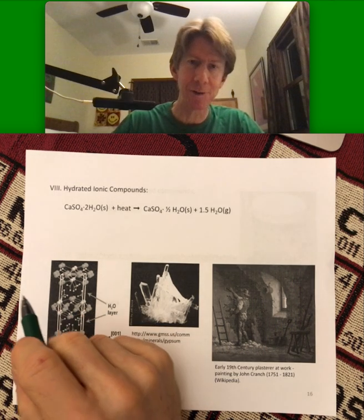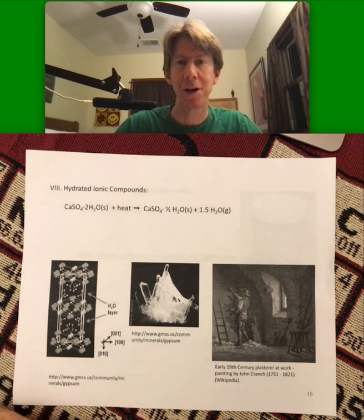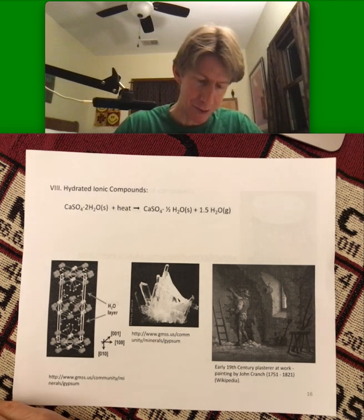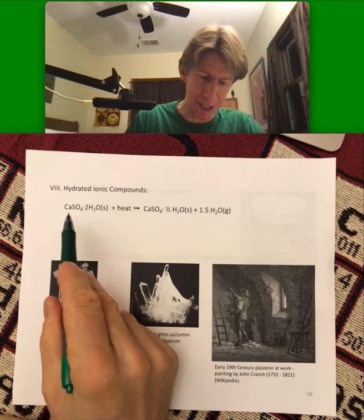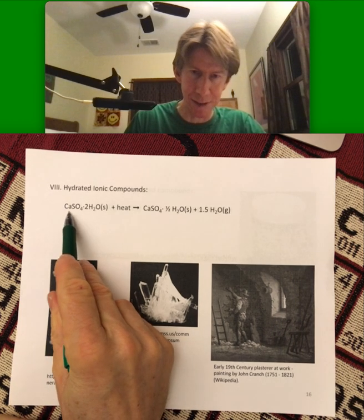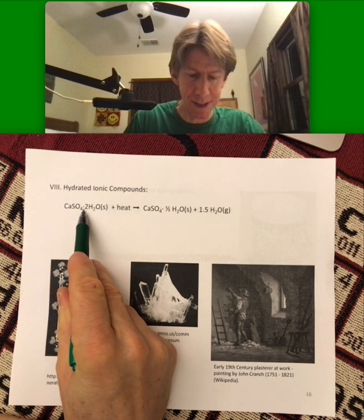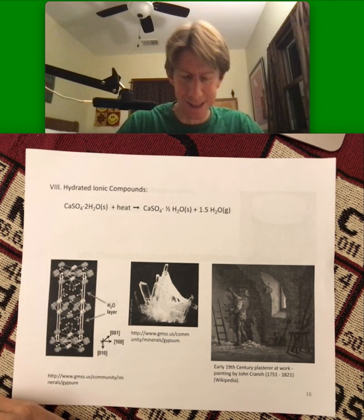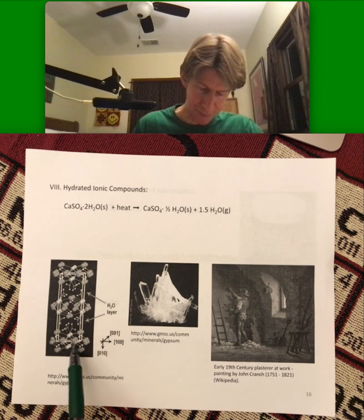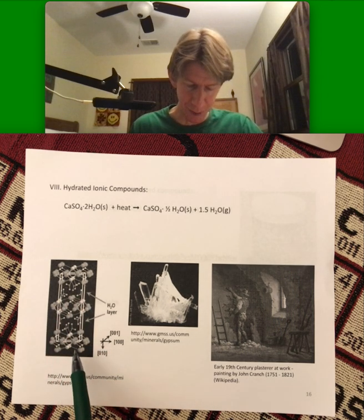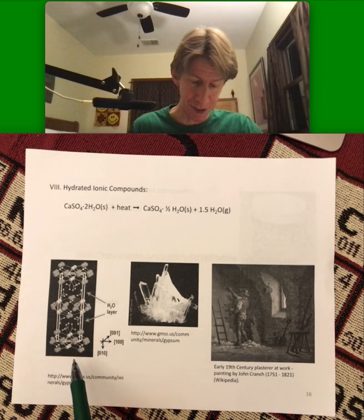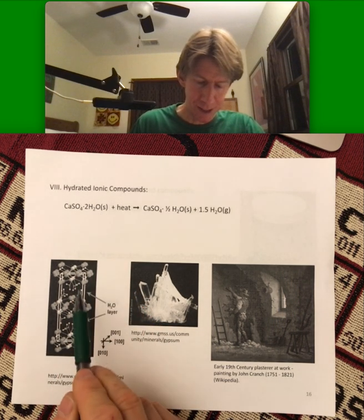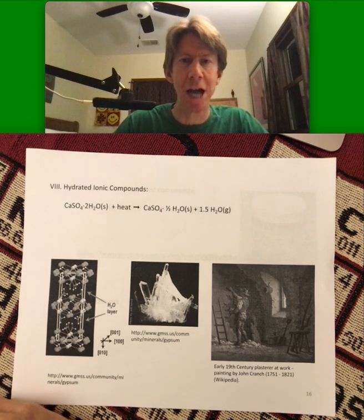Hydrated ionic compounds are oftentimes mined straight out of the ground. What they mean is that you have an ionic compound like calcium sulfate with a dot 2H2O — a dot some number of H2Os — and it means that when it forms in the solid phase, water molecules get trapped in there.